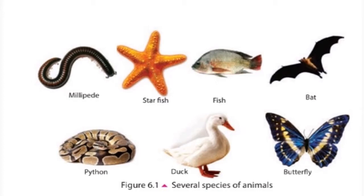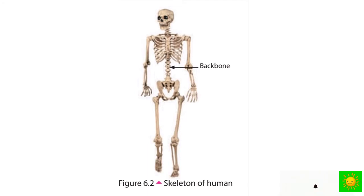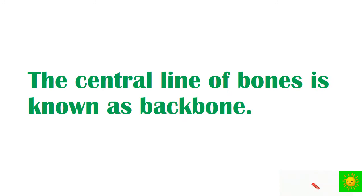A scientific way of classification is essential to group animals. Now I'm going to show you a skeleton of a human, which we can see in our school laboratory. Can you see the marked word — backbone? The central line of bones is known as the backbone. Many animals, including human beings, have a backbone.